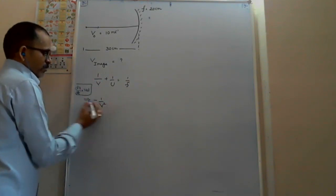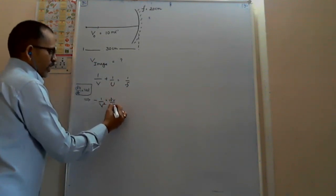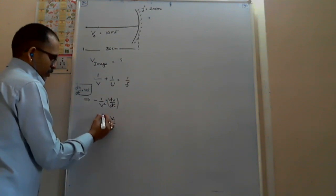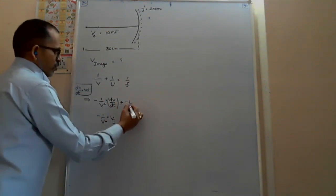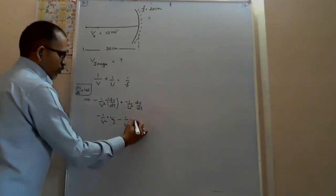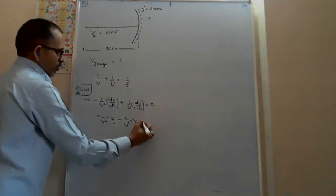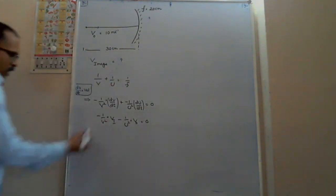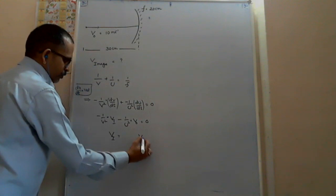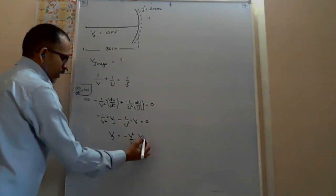So if I differentiate U, I get velocity of object, and by differentiating V, I get velocity of image. Differentiating 1/V + 1/U = 1/F gives: minus 1/V² × dV/dt, and that dV/dt I take as velocity of image; minus 1/U² × dU/dt, that is velocity of object. Equals zero.